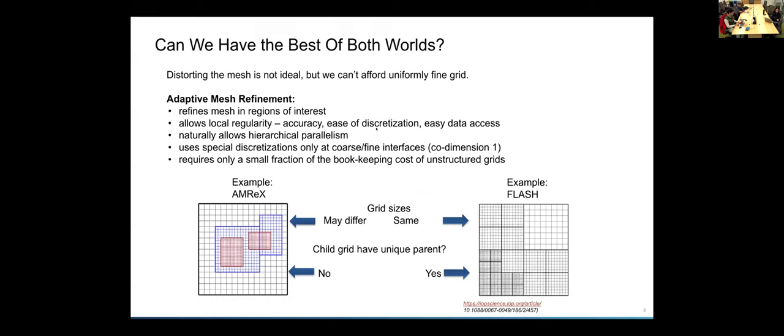So in some ways, anyway, doing adaptive mesh refinement with structured grids is kind of the best of both worlds, right? You can have a uniform cell spacing on each level, but then you can have a hierarchy of different levels that kind of make the mesh finer in regions of interest. And so this allows local regularity with all the advantages that come from that. And it also, you only have to do something special at this sort of coarse-fine boundaries. And so this, but this only requires a small fraction of the bookkeeping cost of unstructured grids.